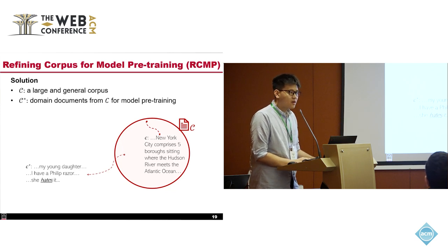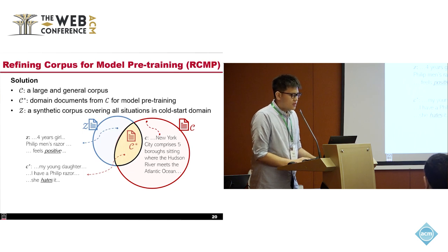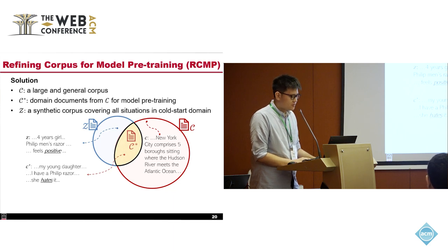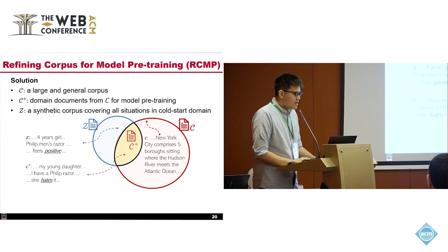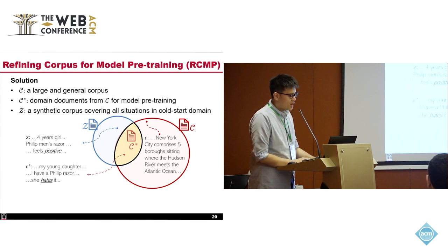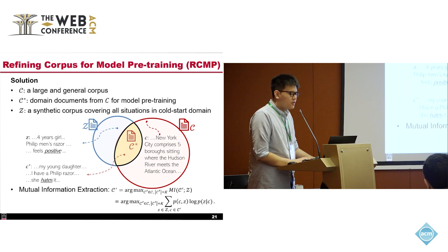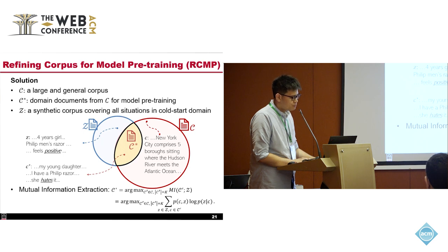To overcome this, we must select domain-relevant documents. We introduce a synthetic corpus Z covering all possible knowledge usable in our cold-start domain, constructed by exhausting all possible values of the user-item feature space and their possible sentiment words. The relation among Z, C, and C* is visualized here. Z is not fully included by C, because Z may include unrealistic situations not present in real-world corpora. Given Z and C, the documents from the overlapping area are those we are interested in. We propose to select the K documents from C that maximize the mutual information between C and Z. With some derivation, we find this selection objective can be easily estimated by an open-source FITUO model from Hugging Face.